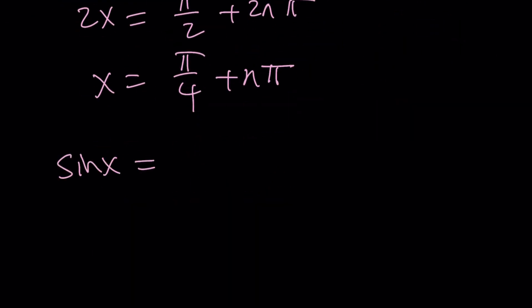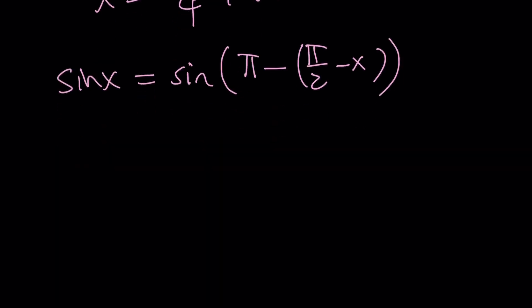When you subtract an angle from π, its sine does not change. So I can go ahead and subtract this angle from π. Sin x equals sin(π - π/2 - x). From here, we get x equals π - π/2 is π/2, minus minus is plus x plus 2kπ. x cancels out, and then we get zero. This is kind of meaningless. We don't get any x values from here.